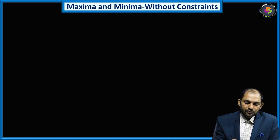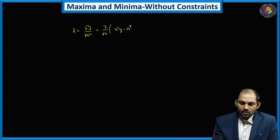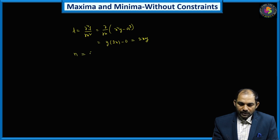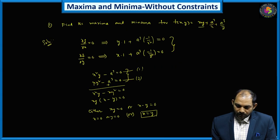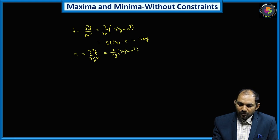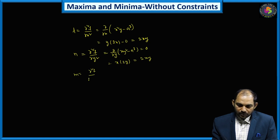Using the stationary point, we compute the sign of LN − M². Here L = ∂²f/∂x² = ∂/∂x of (x²y − a³), which treating y as constant gives 2xy. Similarly, N = ∂²f/∂y² = ∂/∂y of (xy² − a³), which treating x as constant gives 2xy. And M = ∂²f/∂x∂y = ∂/∂x of (xy² − a³); treating y² as constant, the derivative of x is 1, giving M = y².